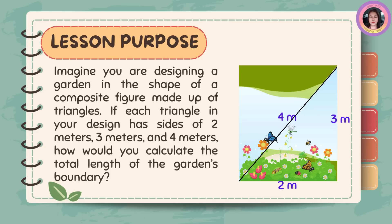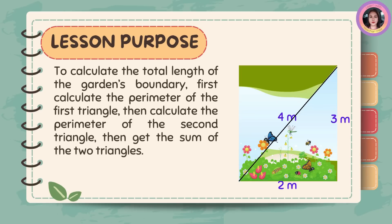Imagine you are designing a garden in the shape of a composite figure made up of triangles. If each triangle in your design has sides of 2 meters, 3 meters, and 4 meters, how would you calculate the total length of the garden's boundary? To calculate the total length of the garden's boundary, first calculate the perimeter of the first triangle, then calculate the perimeter of the second triangle, then get the sum of the two triangles.